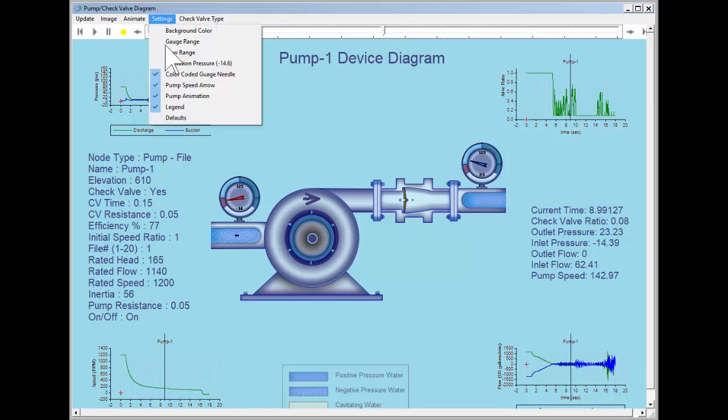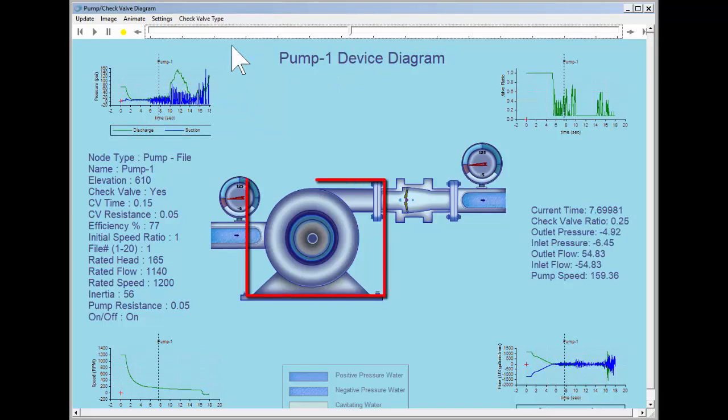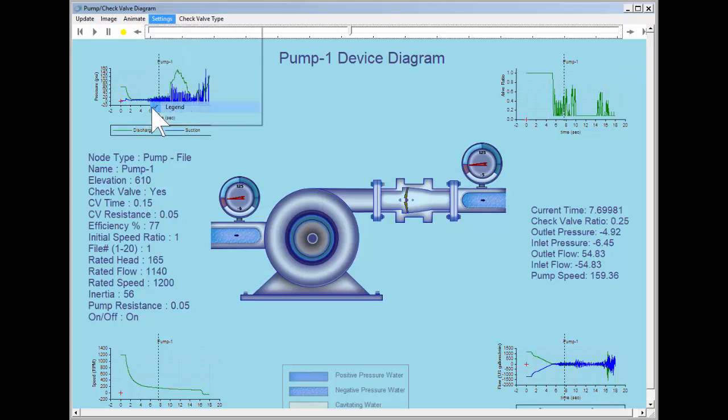We can turn off the pump speed arrow and the pump rotor animation. Dragging the slider now shows that these features are no longer displayed on the pump diagram. We can turn off the legend that shows the various liquid states in the inlet and outlet pipes.